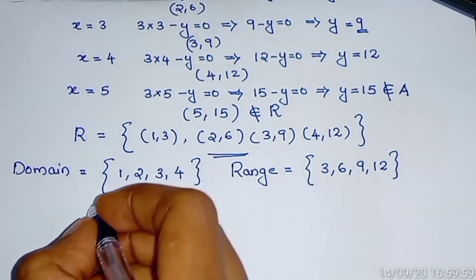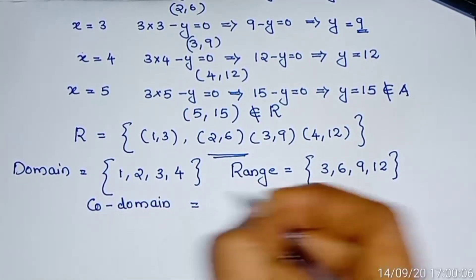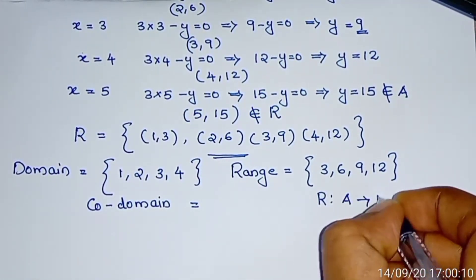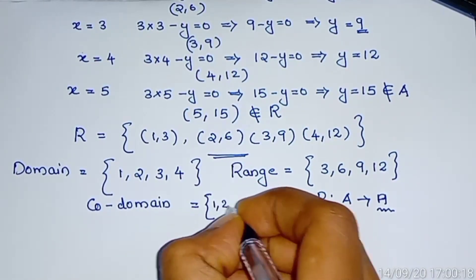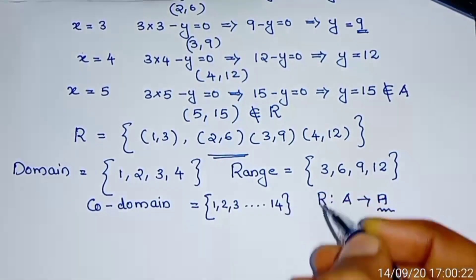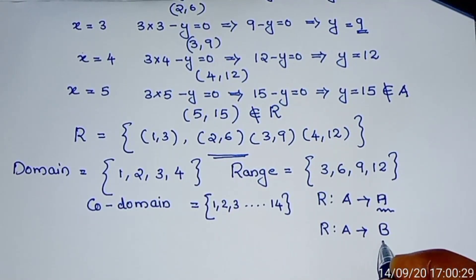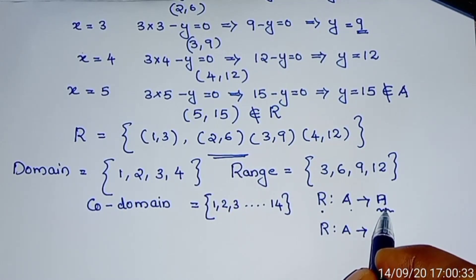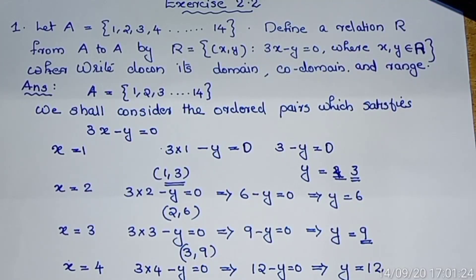Then, co-domain. The set of all elements of A is called co-domain, since the relation R is from A to A. If R is a relation from A to B, then the set of all elements in B is called co-domain. Here the relation R is from A to A, so the set of all elements of A — that is {1, 2, 3, ..., 14} — is the co-domain of this relation R. This is a very important point: A is given, R is the relation from A to A, and we write R in roster form, then find domain, co-domain, and range.